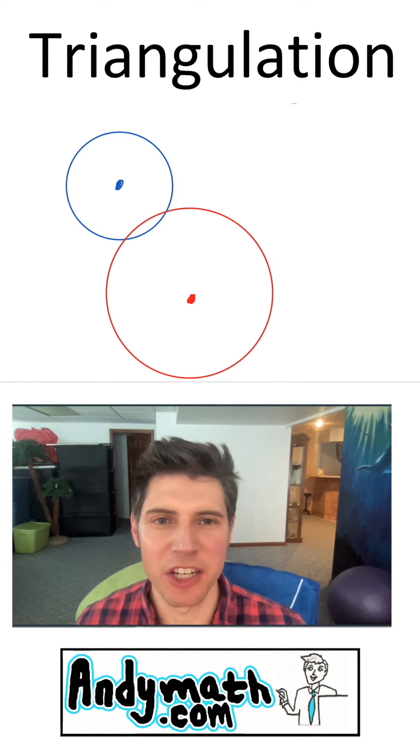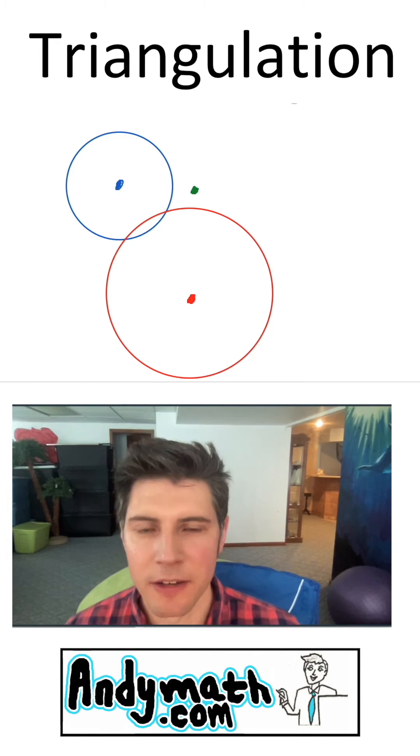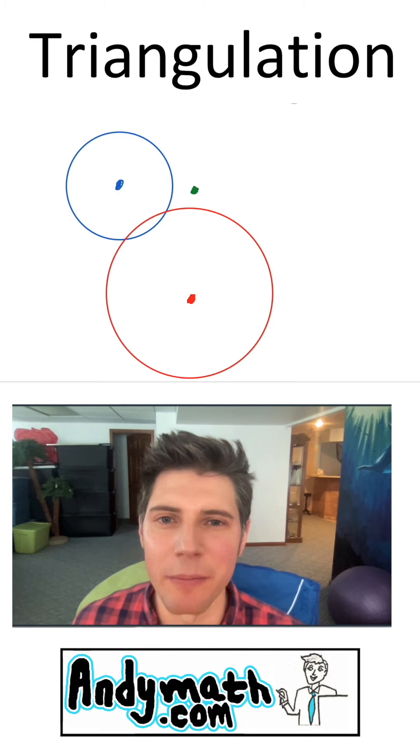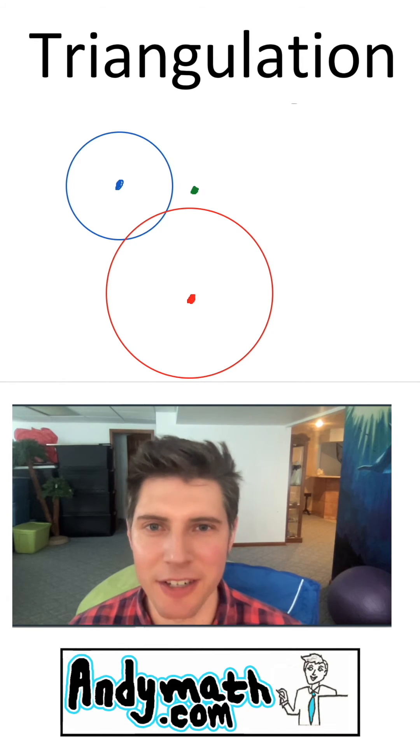If we want to know the exact location we want to find a third cell phone tower. Let's say there's a cell phone tower right here. Now if we know the distance from that cell phone tower let's say 1.8 miles we can draw another circle for that tower.